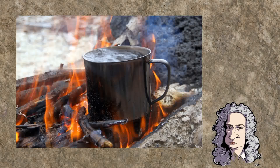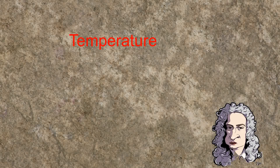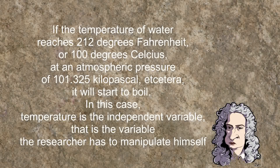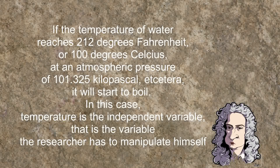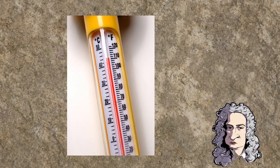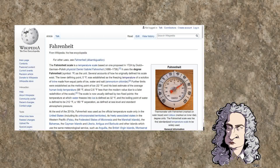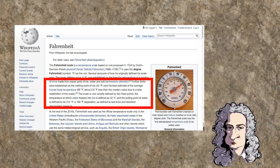Then we have temperature as the cause. The hypothesis would go somewhat like this: if the temperature of water reaches 212 degrees Fahrenheit, or 100 degrees Celsius, at an atmospheric pressure of 101.325 kilopascal, it will start to boil. In this case, temperature is the independent variable — that is the variable the researcher has to manipulate himself. You can manipulate the temperature, but then arises the problem of how the experiment would have to be performed. It will have to be by measuring the temperature. According to Quantum Eraser, a measurement can never be a scientific experiment, but even if we put that aside, what is the scale with which you measure the temperature?